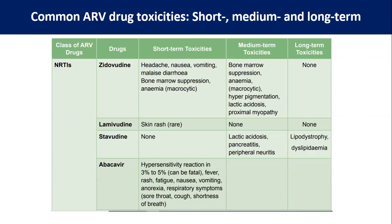For zidovudine in the short and medium term: headache, nausea, vomiting, malaise, diarrhea, bone marrow suppression, and macrocytic anemia. In the long term: bone marrow suppression, macrocytic anemia, hyperpigmentation of the skin and nail, lactic acidosis, and proximal myopathy. For abacavir, hypersensitivity reaction in 3 to 5% is characterized by fever, rash, fatigue, nausea, vomiting, anorexia, and respiratory symptoms like sore throat, cough, and shortness of breath. Whenever respiratory symptoms occur along with GI symptoms, we should be alert that it can be due to abacavir hypersensitivity.